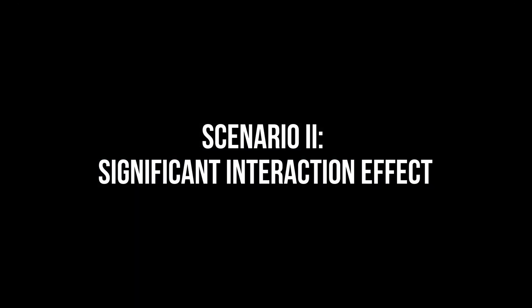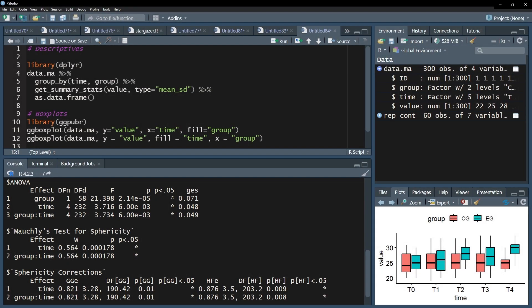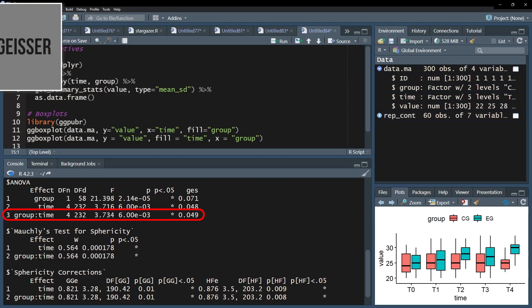Scenario 2. In case you have a significant interaction of your between-subject effect and within-subject effect, you will report this and only this.